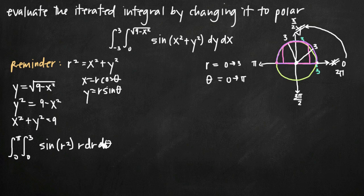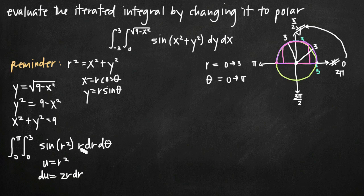We can use u-substitution with u equals r squared to evaluate the integral. Taking the derivative, du equals 2r dr. Notice that we have r dr in our iterated integral. Dividing both sides by 2, we get du over 2 equals r dr. We can now substitute du over 2 for r dr in our equation.